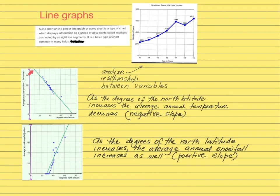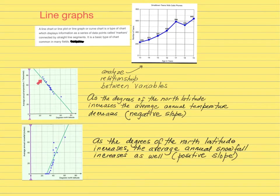As you can see, the relationship between the independent and the dependent variable shows that as you are increasing the independent variable, the dependent variable is decreasing as well. You cannot see that in a bar graph or a pie graph — you're going to be able to see that relationship only when you're using a line graph.